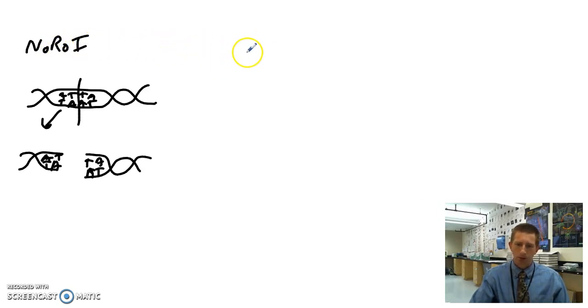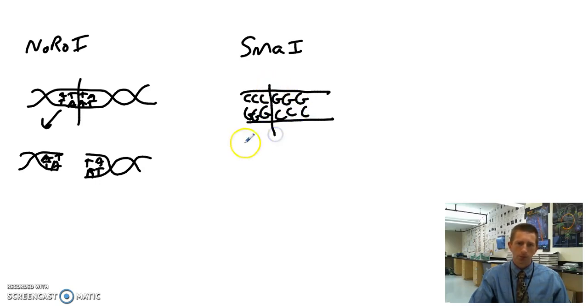Another enzyme that we're going to talk about is SmaI. So SmaI clamps on, runs down, looks for this sequence: C, C, C, G, G, G. So opposite that, of course, G, G, G, C, C, C. And it's going to cut right straight down the middle.